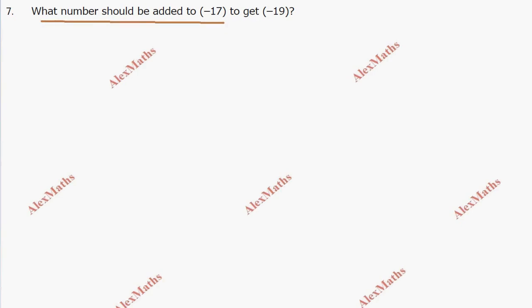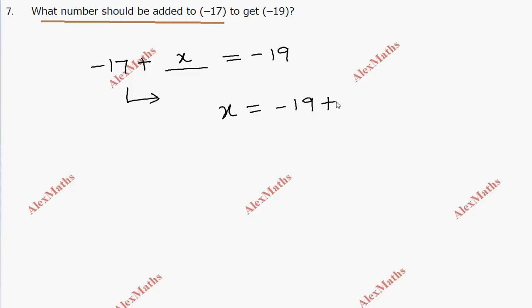Question number 7: What number should be added to minus 17 to get minus 19? So x plus minus 17 equals minus 19. Minus 17 gives opposite sign, so 2 may opposite sign. Peri number of subtraction, peri number of sign is 2. The answer is minus 2.